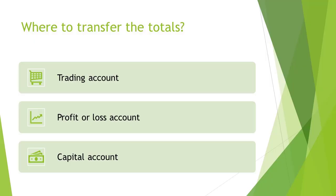The trading account is used to determine the gross profit of a business, and is only used in retail entities and not service entities. This means that it is only used for businesses that buy and sell inventory. The reasoning behind this is because gross profit is calculated by deducting cost of sales from sales.